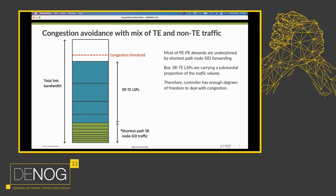When telemetry reports how much traffic is on a physical link, it reports the total — it doesn't distinguish TE traffic from plain IP or shortest-path SR traffic. That one number is compared against the congestion threshold by the controller. The degree of freedom the controller has to ease congestion on a particular link is to move one or more SRTE LSPs. That's the essence of how it works — a great example of closed-loop automation in networking with an SDN controller.